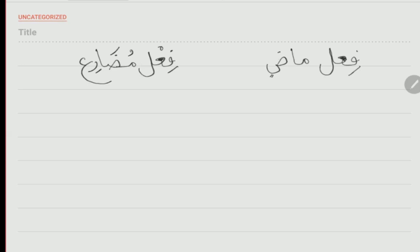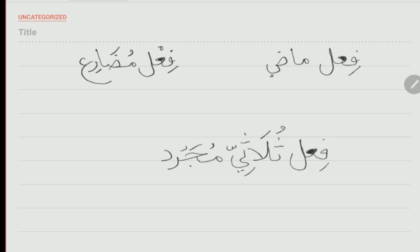You know that there's something called fi'lun thulathi — a verb that has three root letters. Fi'lun thulathi mujarrad means bare or devoid, meaning devoid of any extra letters. So we start with the verb that has three root letters and no additional letters. It's only going to have three letters in its madi form, in the past tense form.